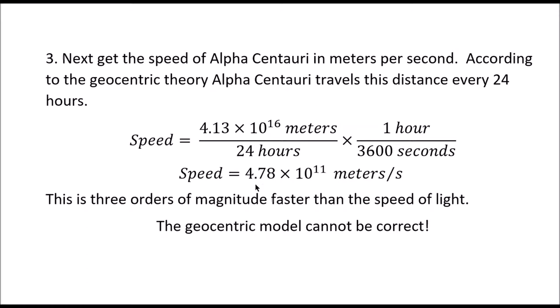This would be 4.78 × 10^11 meters per second. Alpha Centauri would have to travel 4.78 × 10^11 meters per second, which is over three orders of magnitude faster than the speed of light. The geocentric model cannot be correct.